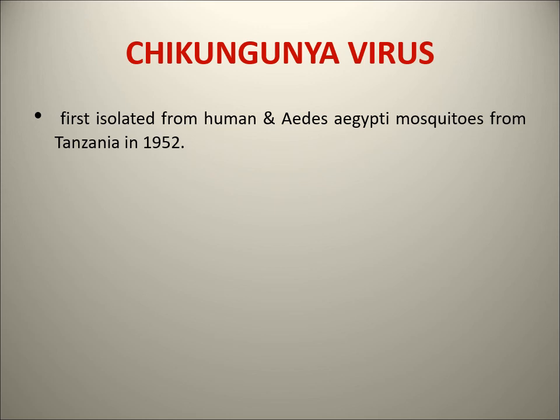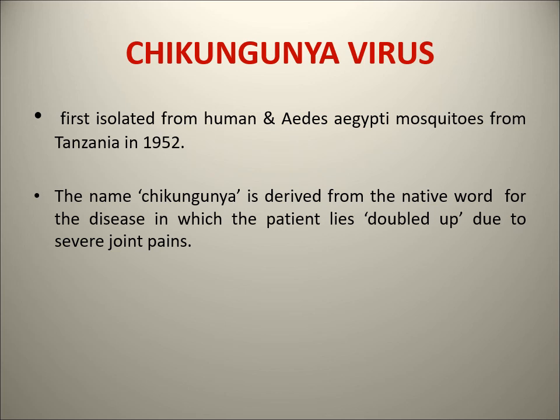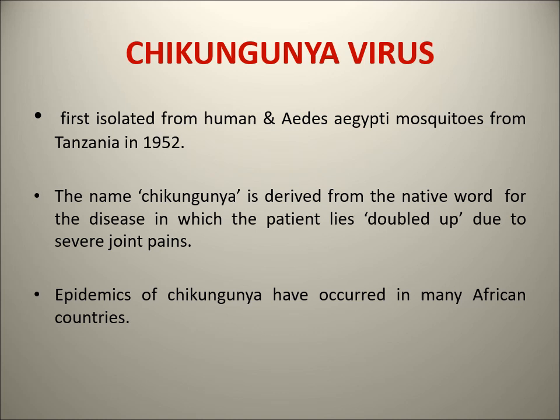Now, a particular arbovirus - the Chikungunya virus. Chikungunya comes under the Alphavirus group of arboviruses. It was first isolated from humans and from the Aedes aegypti mosquito in Tanzania in 1952. The name Chikungunya was given because of the severe joint pain seen in the infection - the pain is so severe that the patient becomes doubled up due to it, and therefore the name was given.